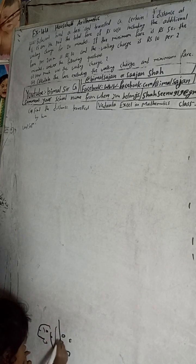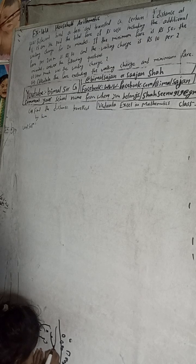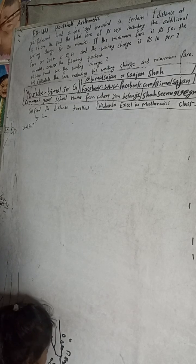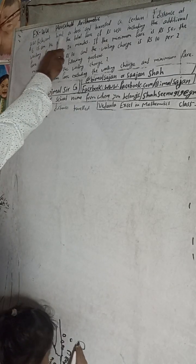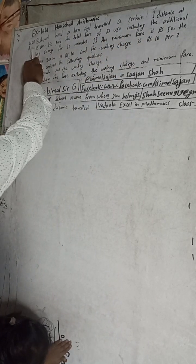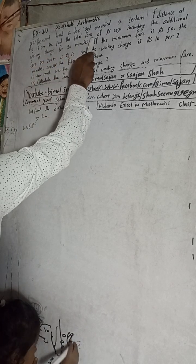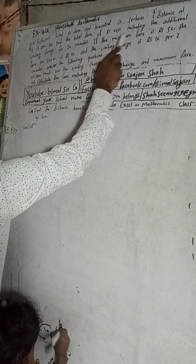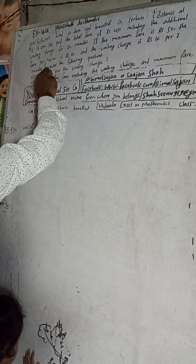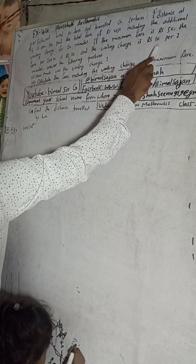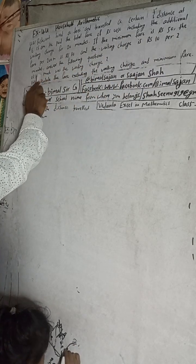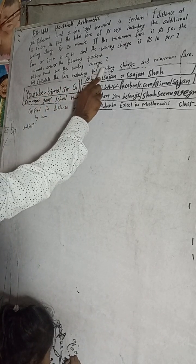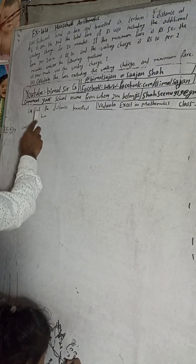Hi class 9 and 10 students, welcome back to Bimal Sarji's YouTube channel. This is question number 4a, exercise 4.4, household arithmetic from Vedanta Excel in Mathematics class 9. The question: someone hired a taxi and traveled a certain distance. At 6:15 AM he paid a total fare of Rs 450 including the additional waiting charge for 20 minutes. Answer the following questions: number one, how much was the waiting charge? Number two, calculate the fare excluding the waiting charge and minimum fare. Number three, find the distance traveled by him.